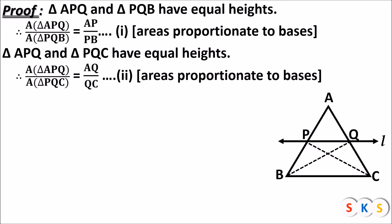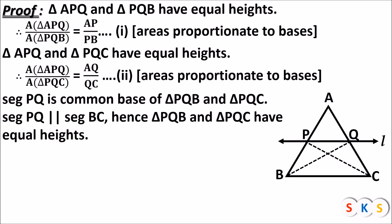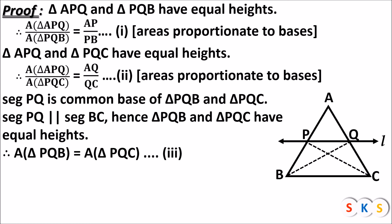Now look at this figure. Here we have triangle BPQ and triangle PQC. Both lie between the same parallel lines, so their heights are equal. Segment PQ is the common base of both triangles. Since the heights and bases of both triangles are equal, area of triangle PQB equals area of triangle PQC. This is equation three.